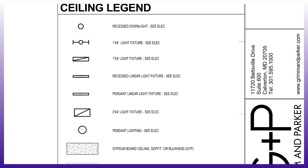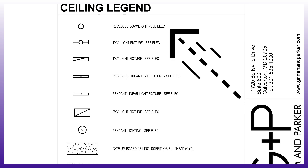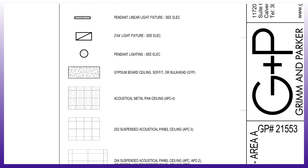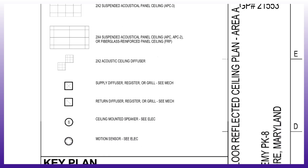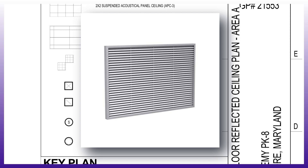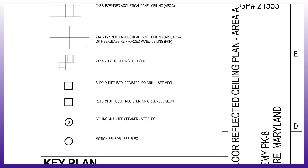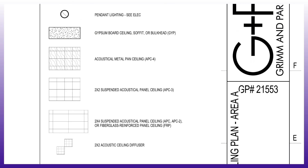Let's go down to the ceiling legend here. These are lights and different fixtures related to electrical things, and that's why it says recessed downlight — see electrical; 1x4 light fixtures — see electrical. The ceiling legend also indicates the different types of ceilings: gypsum board ceilings, acoustical metal pan ceilings, 2x2 acoustical panels, and some mechanical items like grills, diffusers, speakers, and motion sensors. These are all the symbols for those items.